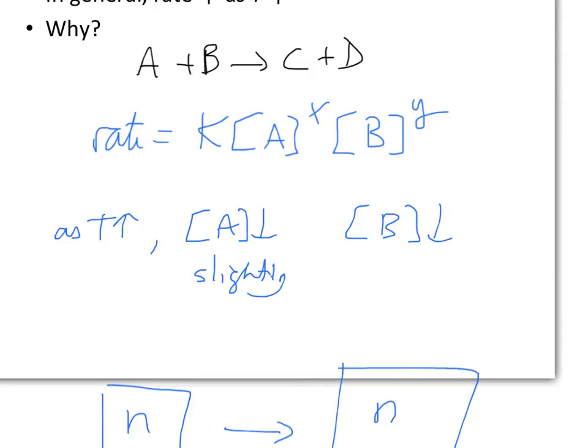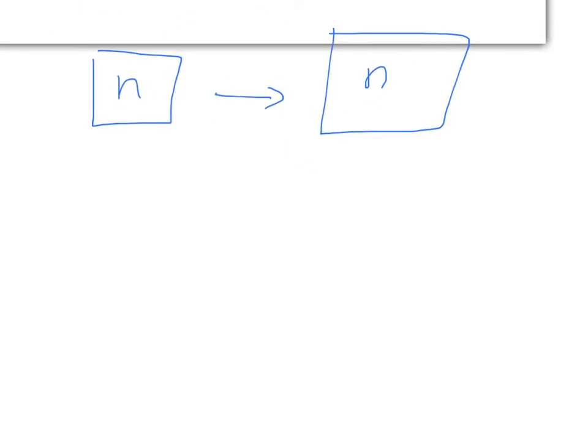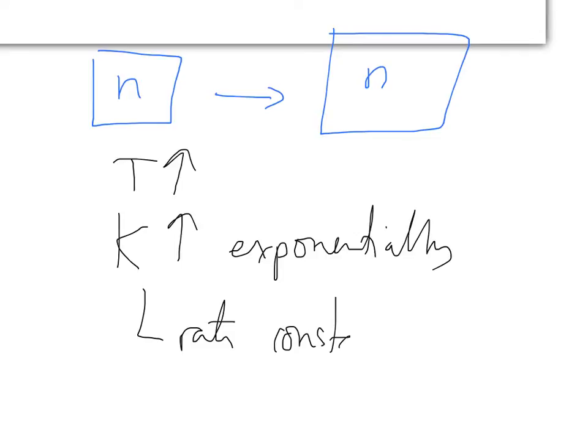And it turns out to have an incredibly strong exponential dependence on temperature. So as the temperature goes up, K goes up exponentially. And so the rate constant, although we call it a constant, it's only constant for a particular temperature. As we change the temperature, K goes up exponentially. Let's have a look at the next slide where we show how K changes with T.